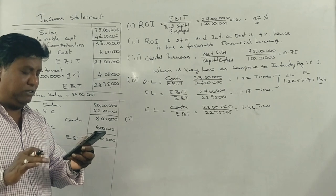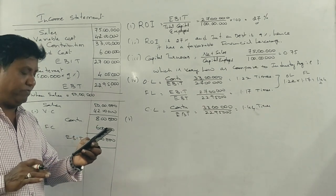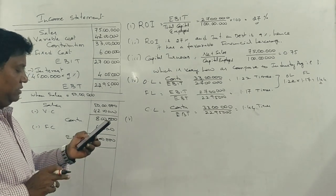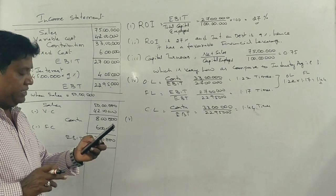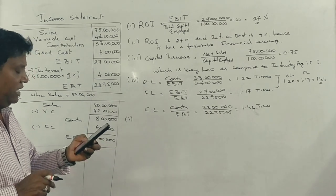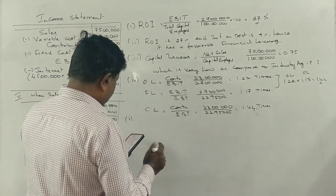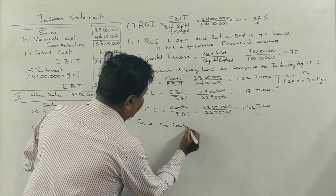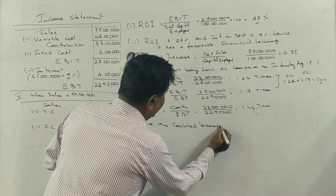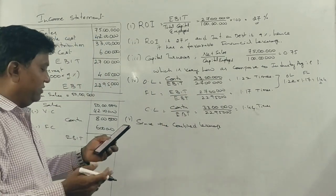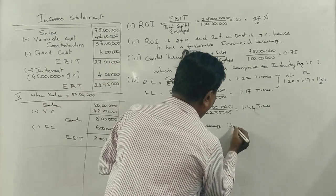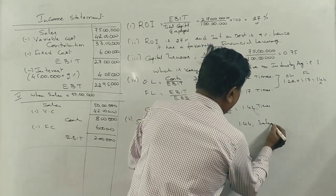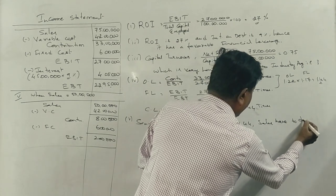Last question: at what level will EBIT of the firm equal zero? Using the combined leverage of 1.44, sales must drop by 100 divided by 1.44, which equals 69.44 percent.